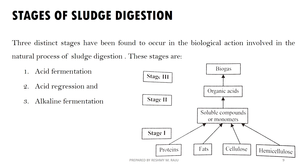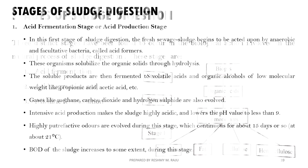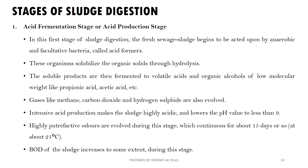There are three stages of digestion: acid fermentation, acid regression, and alkaline fermentation. In the first stage — acid fermentation — complex material like proteins, fat, cellulose, and hemicellulose are attacked by bacteria and solubilized through hydrolysis. The solubilized products undergo fermentation, producing volatile acids and organic alcohols with lower molecular weight, like propionic acid and acetic acid. The pH drops to around 6.